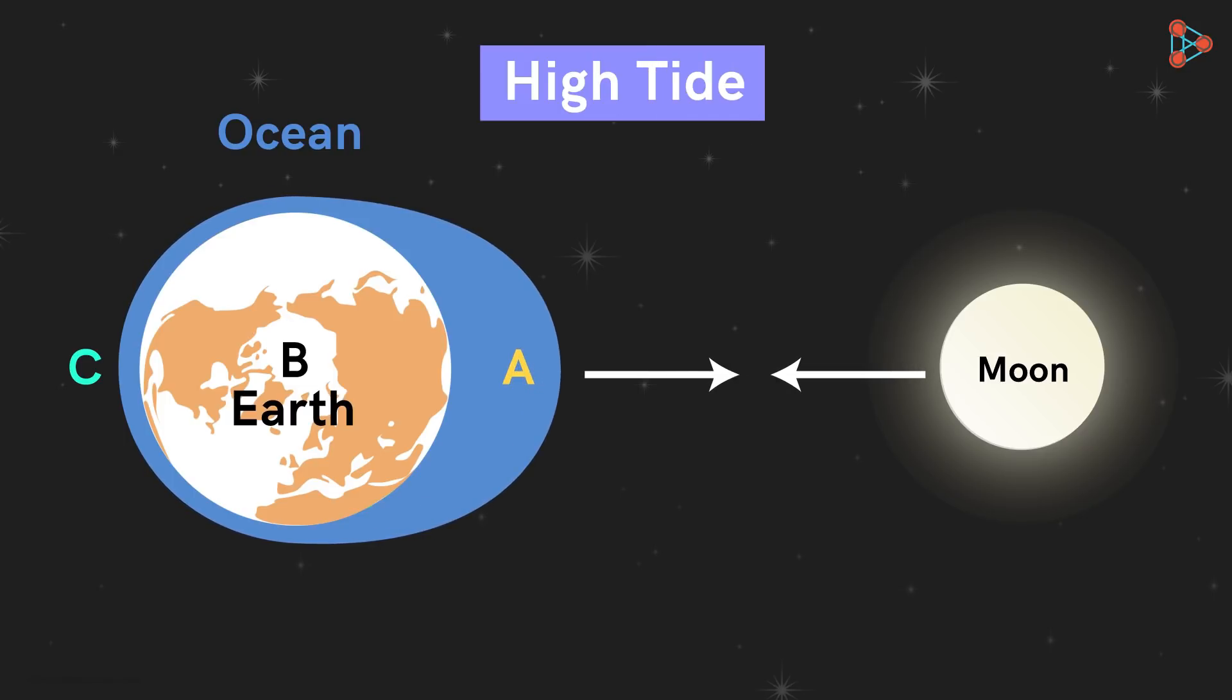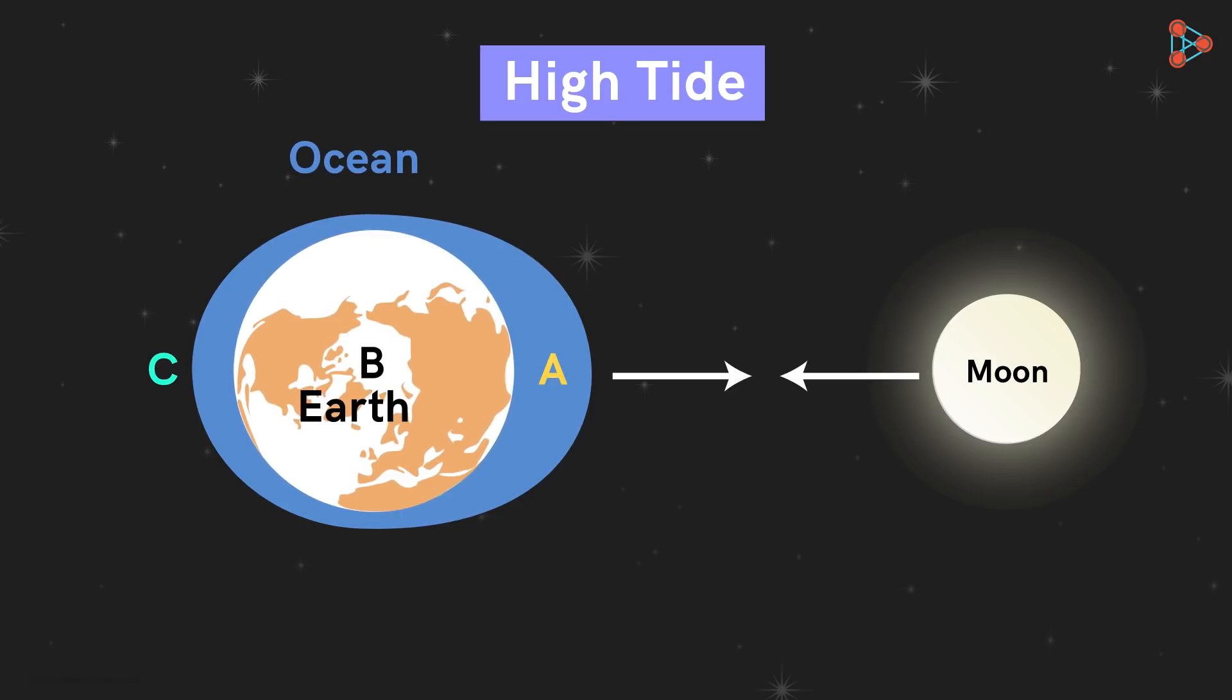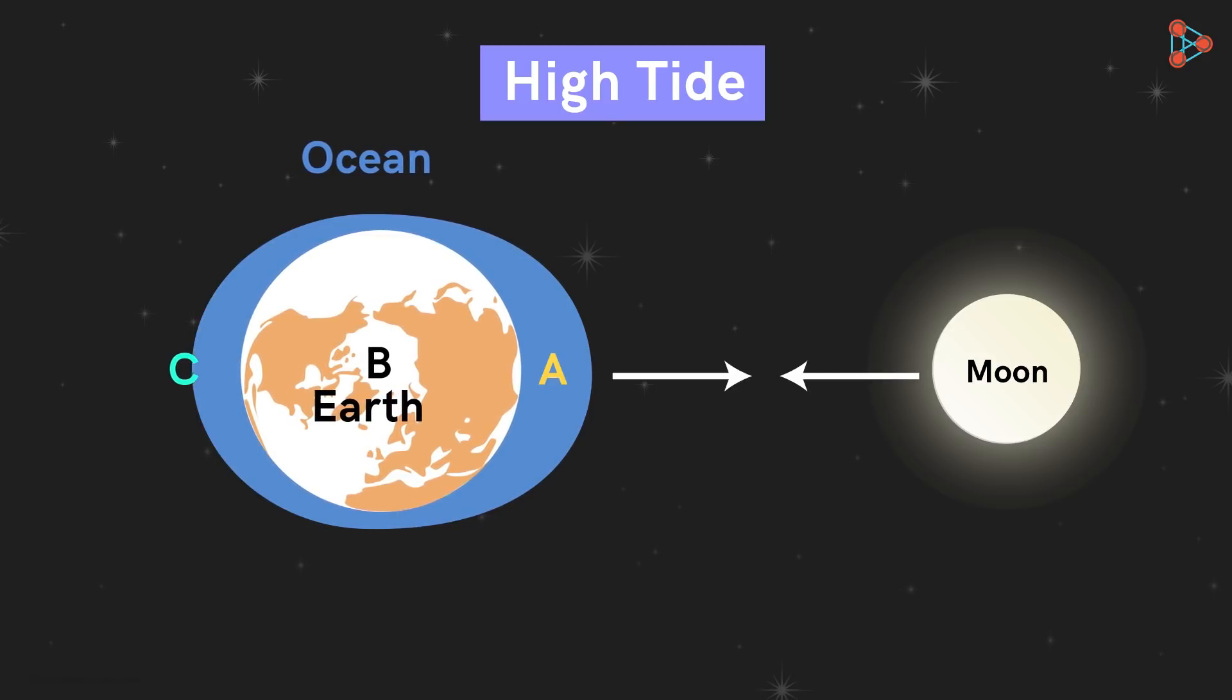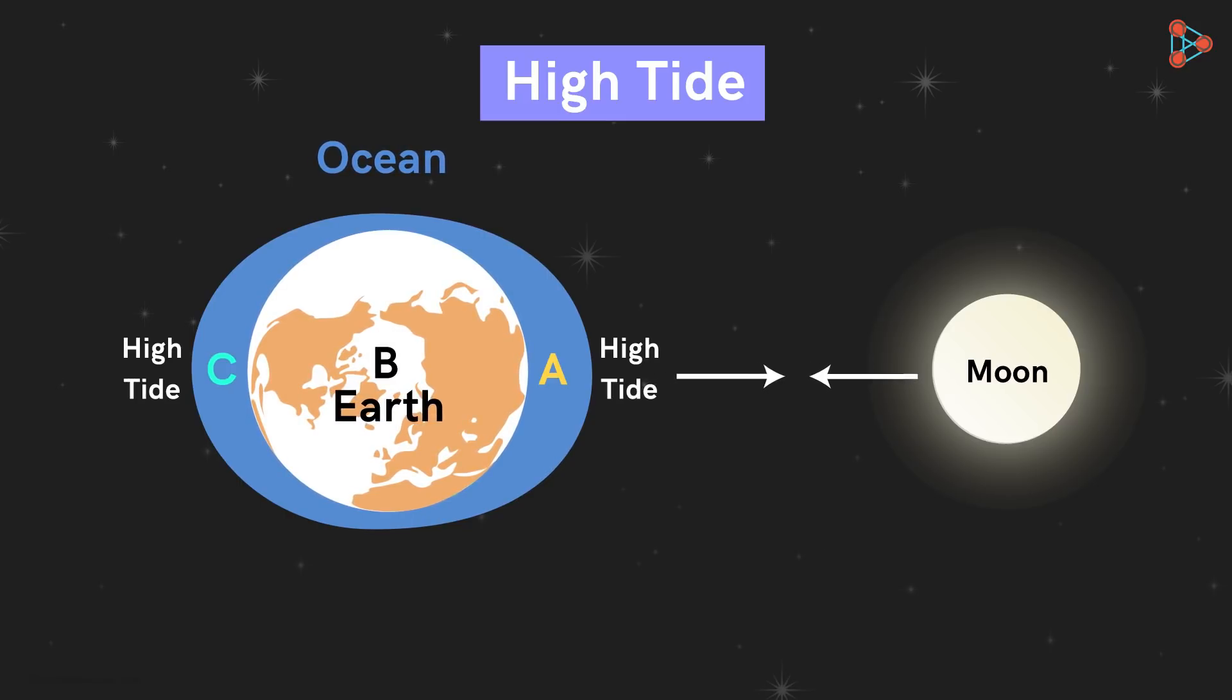At the same time, the gravitational pull acting at point B, that is the centre of the earth, is greater than that at C. Hence, the movement of point B will be more than the movement of point C. We can imagine it like this: this sphere moves leaving the water behind, leading to this bulge or the rise in water level on this side, which is nothing but a high tide. This is how two high tide regions are formed, one at A and the other at C.